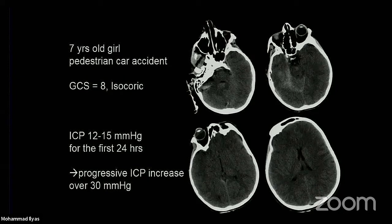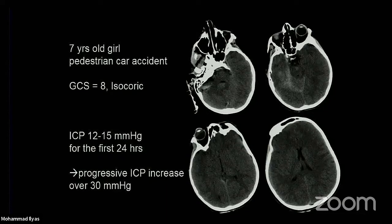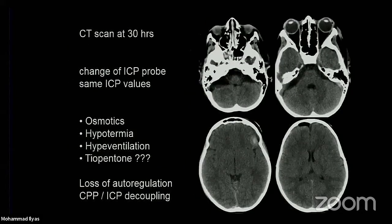A seven-year-old pedestrian-car accident. At first entry into the ER she was isochoric. The CT scan showed only SAH - nothing special. Small ventricles but not enlarged relative to the head - maybe a sign of brainstem involvement. A little bit of blood suggesting an important dynamic trauma. The ICP was between 12 and 15 for the first 24 hours, and then we observed a progressive ICP increase to over 30, requiring osmotic therapy. We repeated a CT scan and it was incredibly normal - you can see the cisterns, no contusion, just air probably at the site of ICP probe insertion.